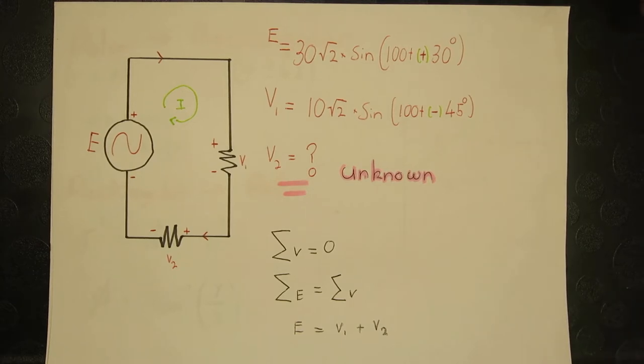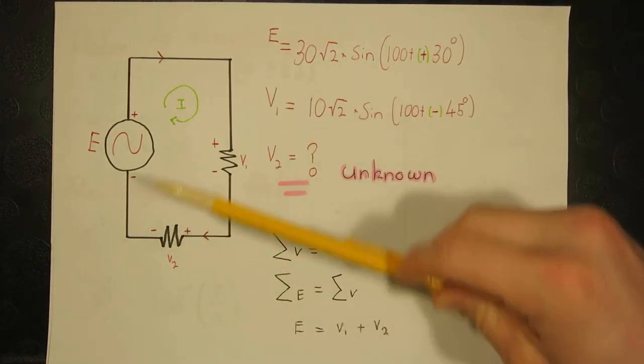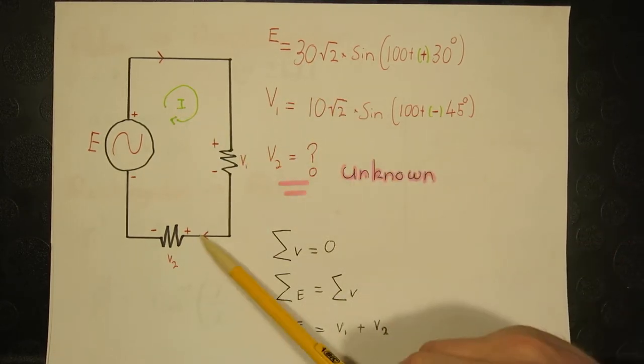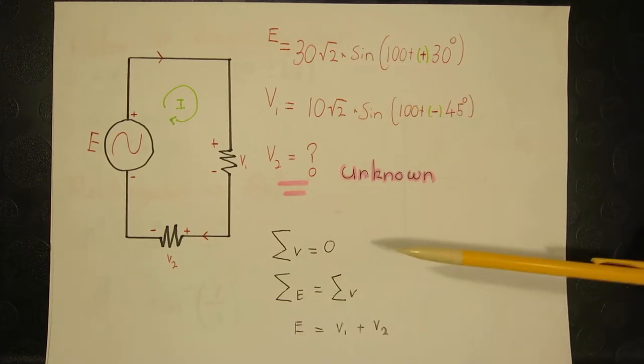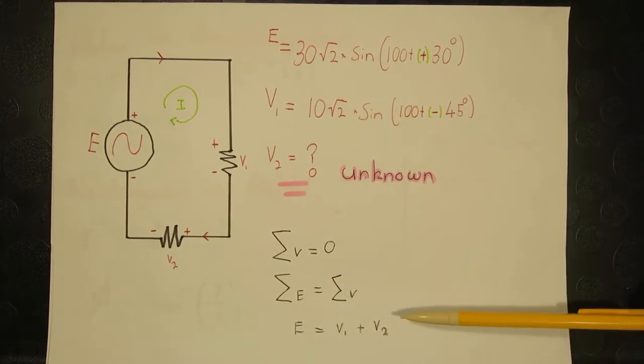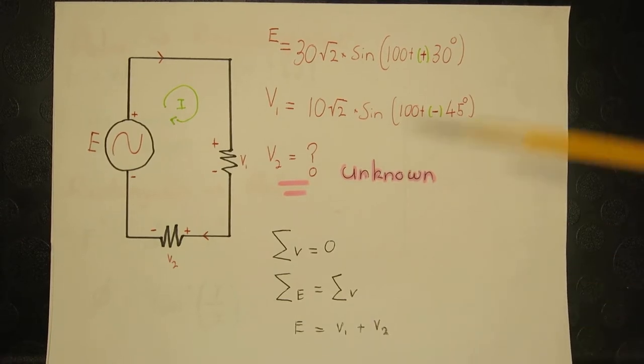This is our basic AC circuit example, with the source voltage around this clockwise current of E, and the components of V1 and the unknown V2. Doing some basic KVL will yield this equation here. However, we cannot do KVL calculations with this sinusoidal waveform. We must convert it.